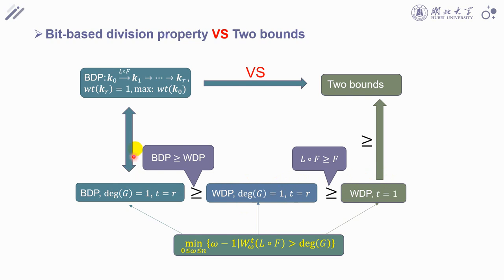As a result, we know BDP is equivalent to model 1. Model 1 is more accurate than model 2. Model 2 is more accurate than model 3. Model 3 is more accurate than the two bounds. So, finally, we have the BDP method is more accurate than two bounds.